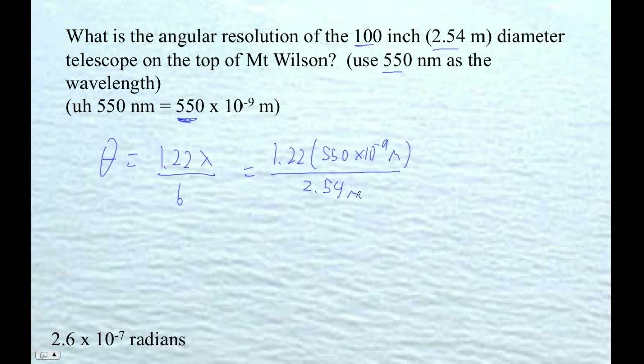All right, here it goes. 1.22 times 550 e minus 9 divided by 2.54 is 2.6417 times 10 to the minus 7th radians.